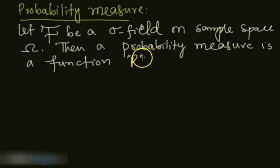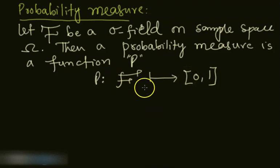P is defined from this sigma field to the closed interval zero to one. It's taking events and assigning some value between zero and one, so it's assigning the probability to events because the sigma field contains events.